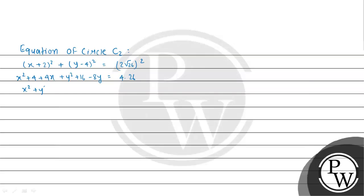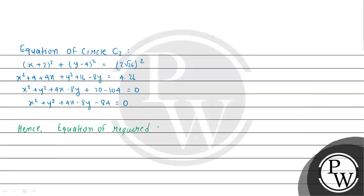Rearranging, we get x² + y² + 4x - 8y + 4 + 16 - 104 = 0, which gives x² + y² + 4x - 8y - 84 = 0. Hence, the equation of the required circle is x² + y² + 4x - 8y - 84 = 0. This is our final answer.